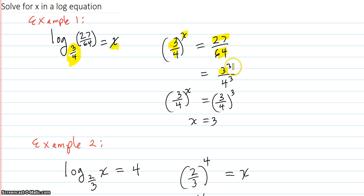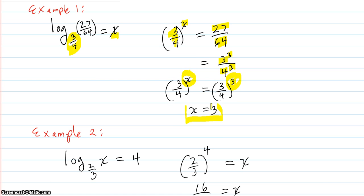So 27 is 3 to the third, 64 is 4 to the third. So that's 3/4 to the third using exponent rules. So 3/4 to the x equals 3/4 to the third. So x has to equal 3 because they have the same base. So 3 is the answer to that one.